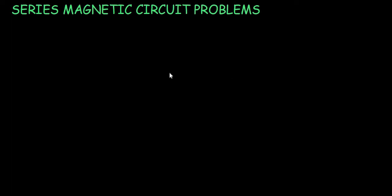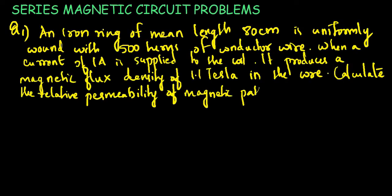Hello students. In this class we discuss problems based on series magnetic circuit. Question number 1: An iron ring of mean length 80 cm is uniformly wound with 500 turns of conductor wire. When a current of 1 ampere is applied to the coil, it produces a magnetic flux density of 1.1 tesla in the core. Calculate the relative permeability of the magnetic path.